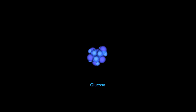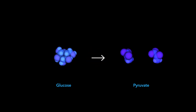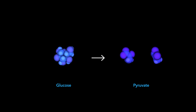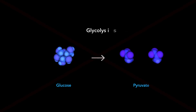The sweet, energetic glucose molecule is the energy source providing power for your living cells. Glucose, from the food you eat, is slowly broken down into two pyruvate molecules, extracting energy in a sequence of enzyme reactions called glycolysis.